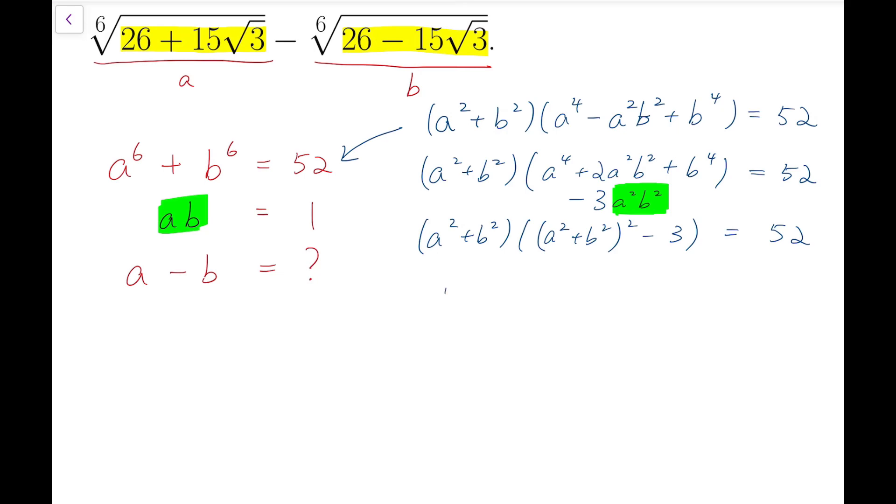Now I'll have (A² + B²)³ minus 3(A² + B²) minus 52 equals 0.